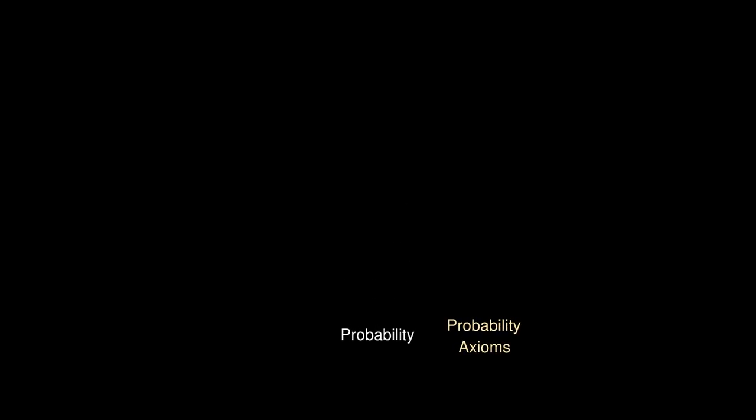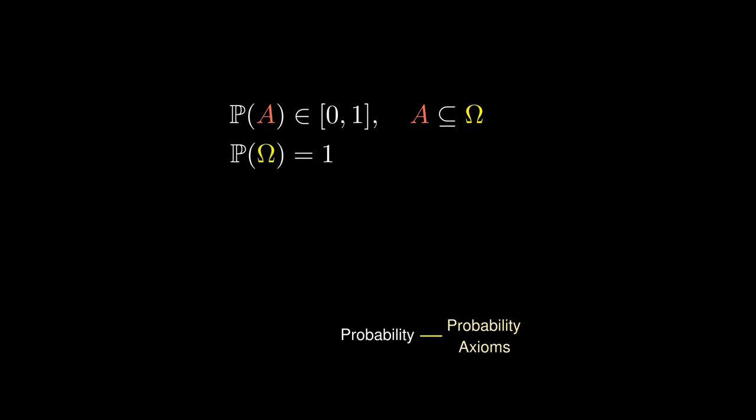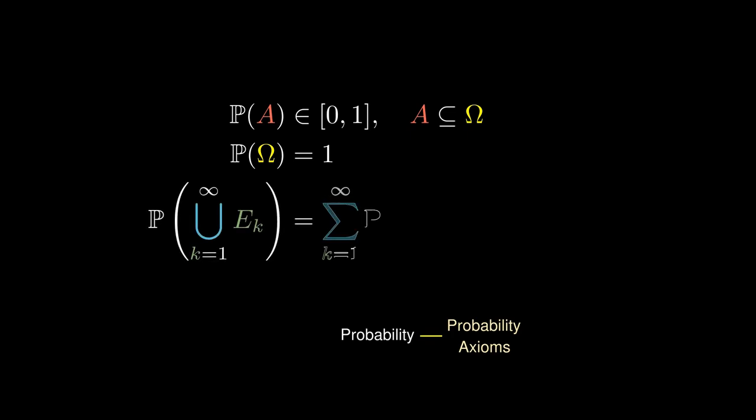Let's summarize college probability in 15 minutes. We first need to establish the basic rules or axioms of probability. The big three rules include: the probability of an event A lying between 0 and 1, the probability of the entire sample space equaling 1, and the probability of a union equaling the sum of the probabilities.